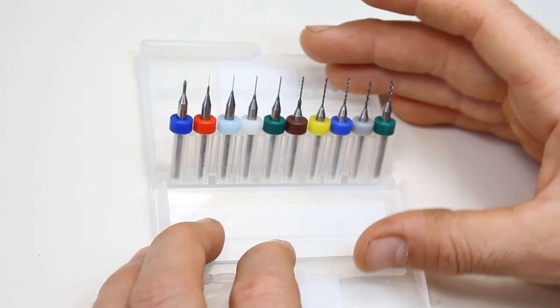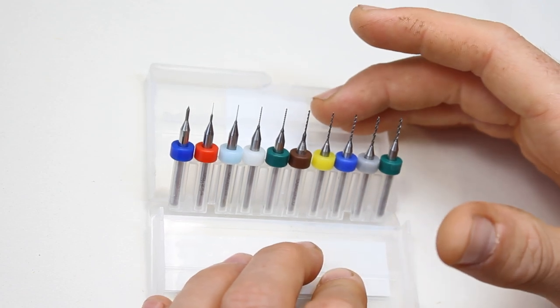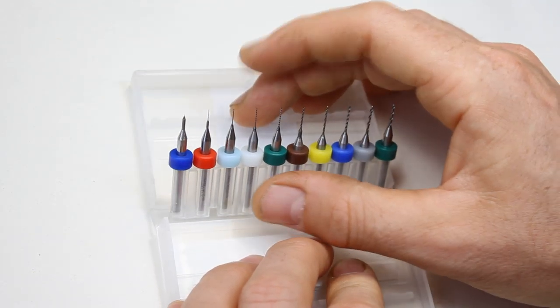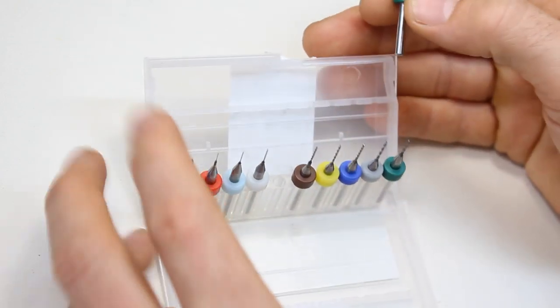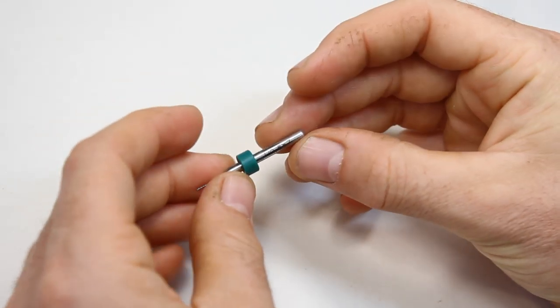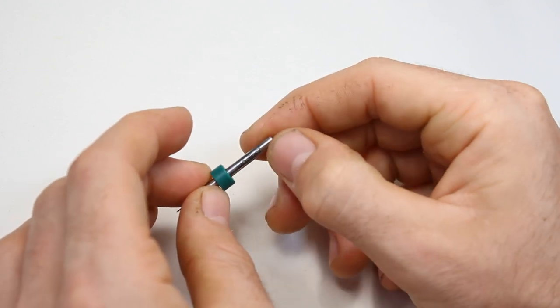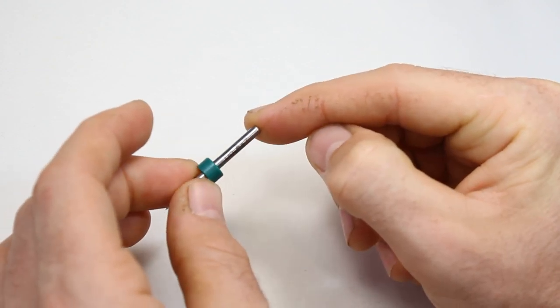So drilling out gun barrels, exhausts, that sort of thing in small scales, it's really good for. So if I just pick one of these, this is 5, they've got color codes but you've also got it printed on the drill bit as well.